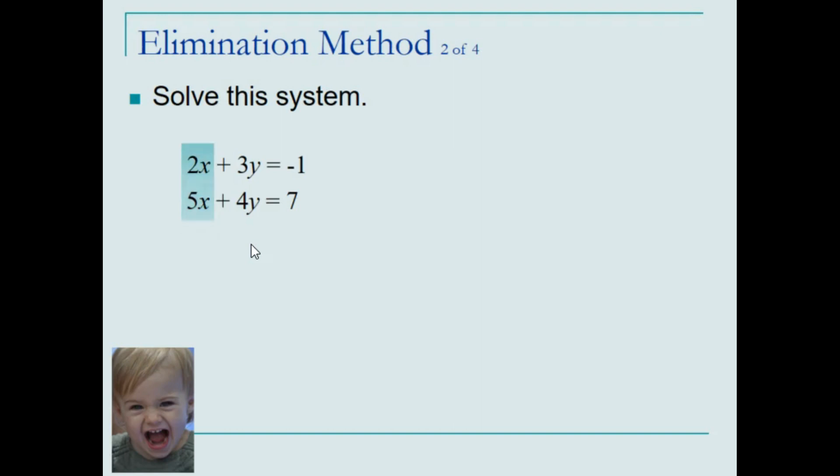Let's eliminate the x term. Looking for the least common multiple of 2 and 5, we find that it is the product of each of these factors, in other words, 10.